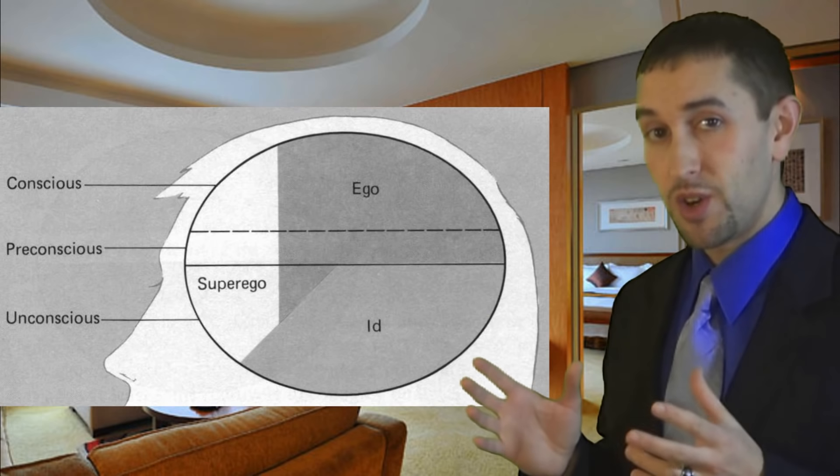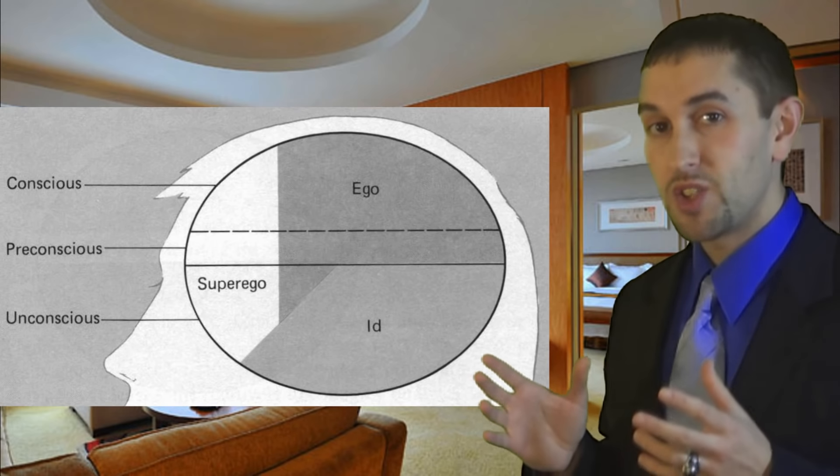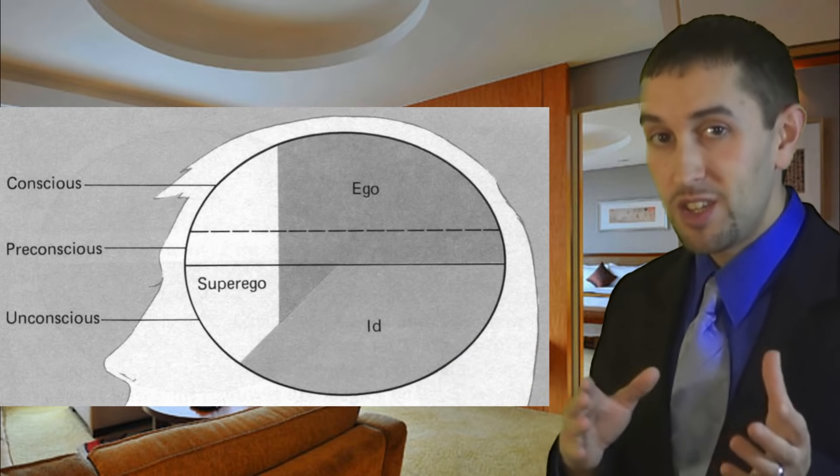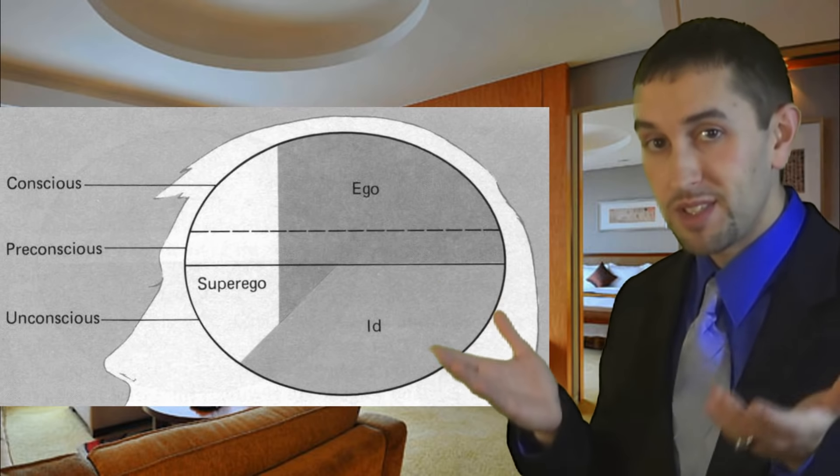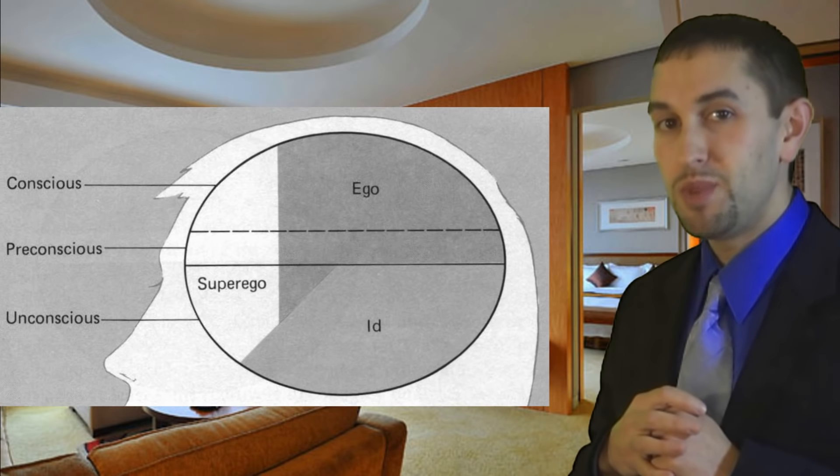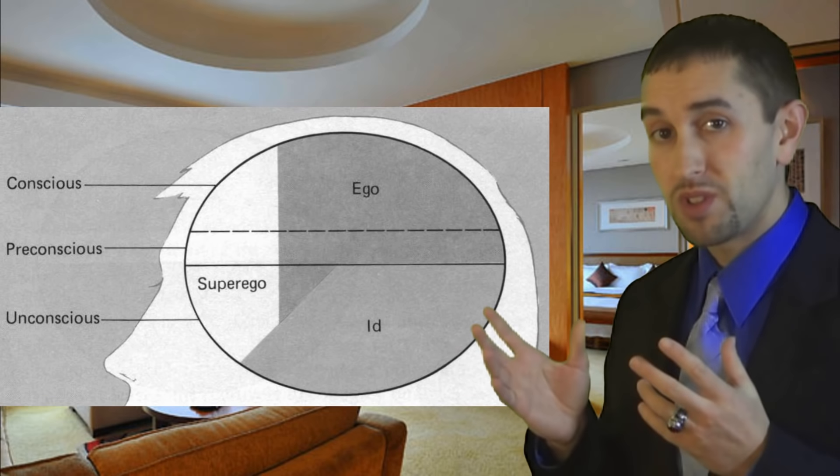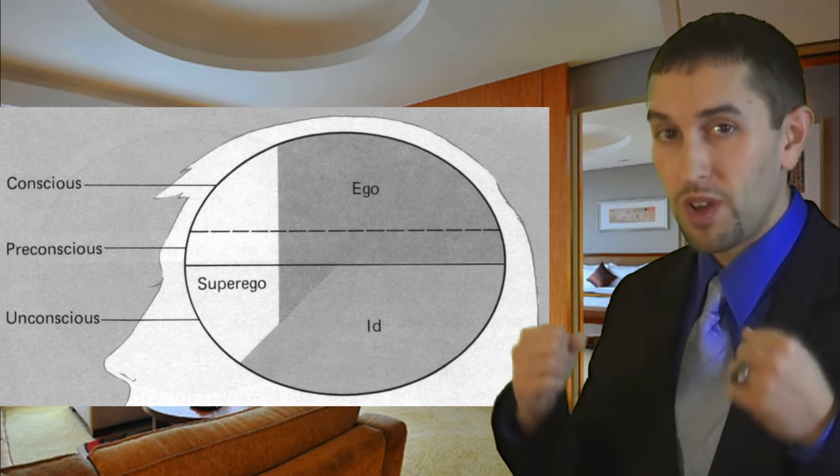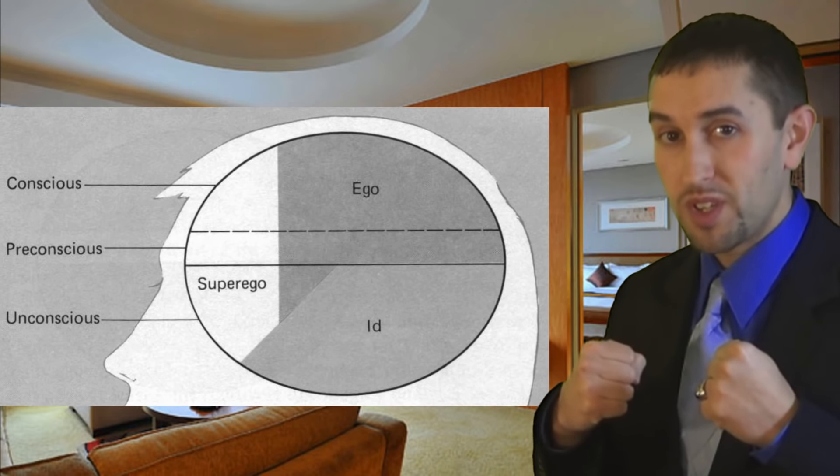Anxiety is a signal to the ego that it is facing a situation which demands action. It could be that the id or superego is becoming too dominant, or it could be a situation where there is a moral dilemma involved, in which case the id and the superego are battling for who is going to be expressed.